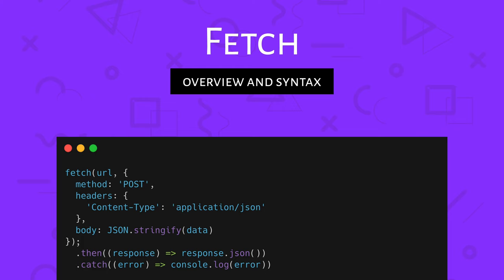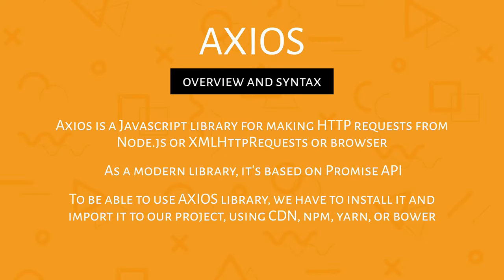Now let's look at Axios and take a similar overview of its syntax. Axios is a JavaScript library for making HTTP requests from Node.js or XMLHttpRequests from browsers. As a modern library, it's based on the promise API. Axios has some advantages like protection against XSRF attacks and cancelling requests. To use Axios, we need to install and import it into our project — it's not built-in and is a totally third-party library. We can install it using any existing CDN, Node, Yarn, or Bower.